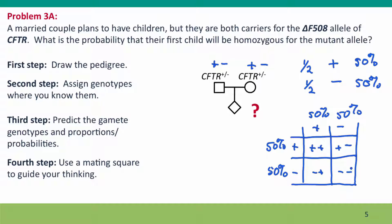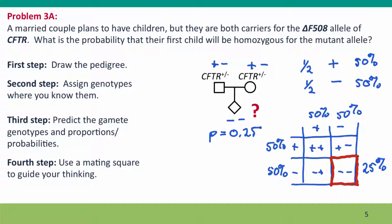The genotype we're concerned about is minus-minus — the probability that the child will have two defective alleles. From our mating square, 50% times 50% is 25%, so a quarter of the time the child will have the minus-minus genotype. We write: minus-minus, p = 0.25, which is the same as p = 25%. That's the answer to this problem.